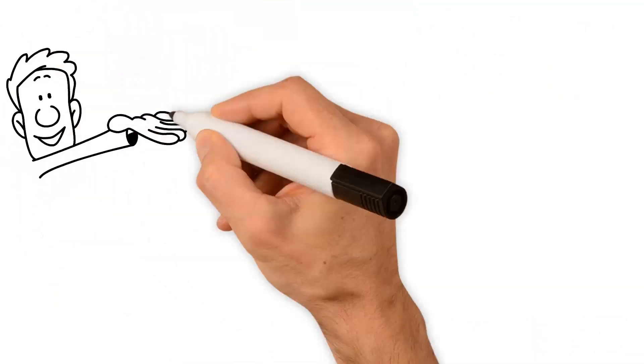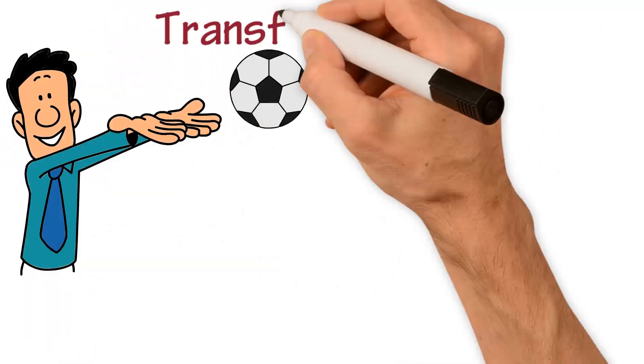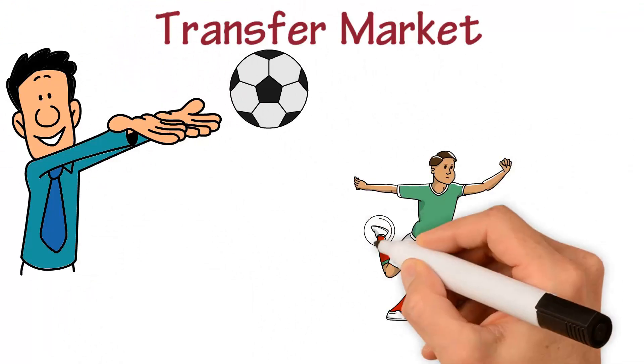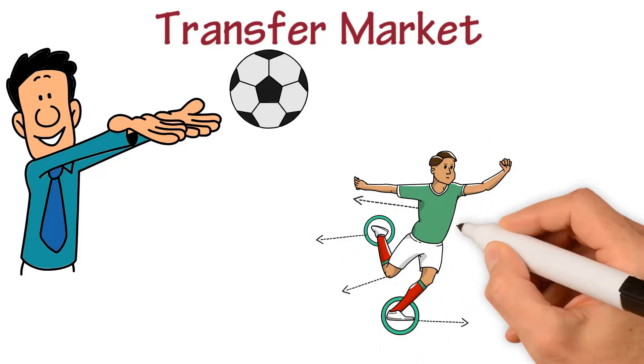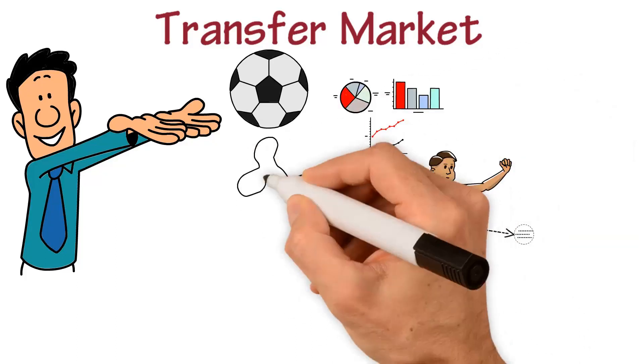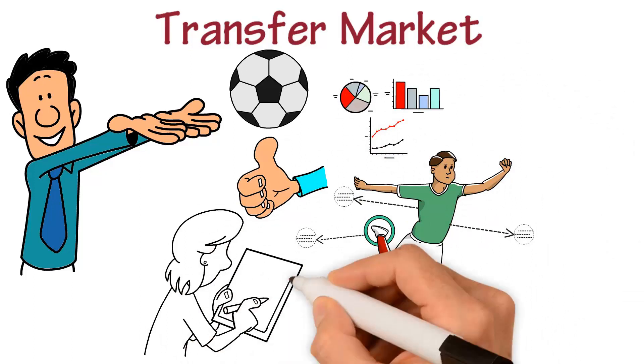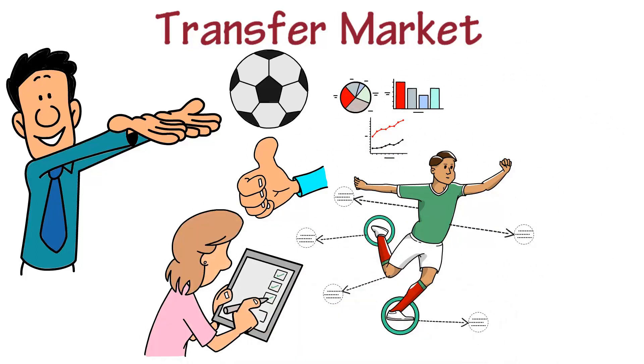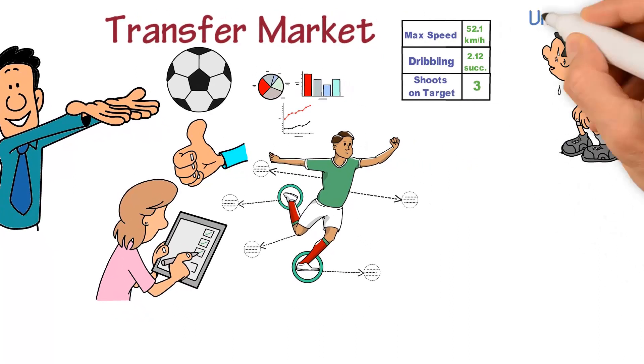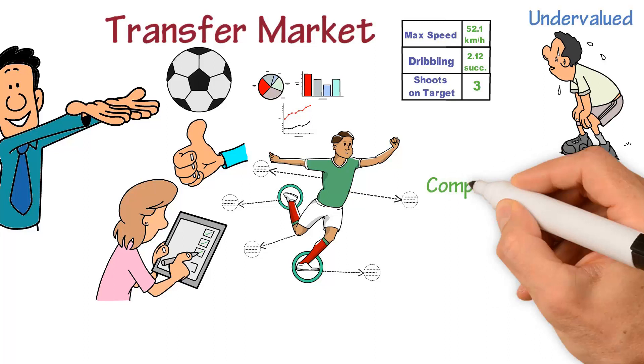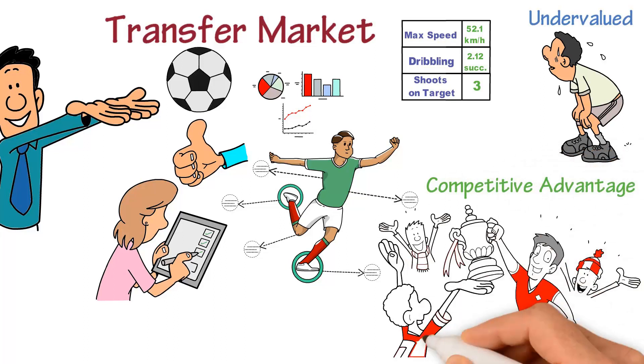Another area where AI is having a significant impact on soccer is the transfer market. AI algorithms can analyze player performance data and provide insights into the value of players, making it easier for teams to make informed decisions when it comes to transfers. For example, AI algorithms can analyze data on player attributes such as speed, dribbling, and shooting accuracy to determine their overall value to a team. This can help teams identify players who may be undervalued and provide them with a competitive advantage in the transfer market.